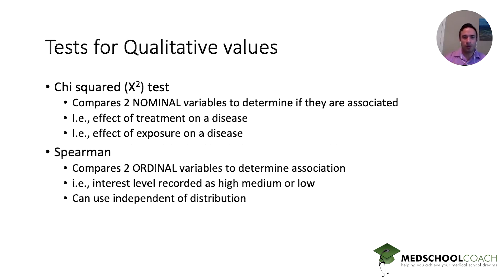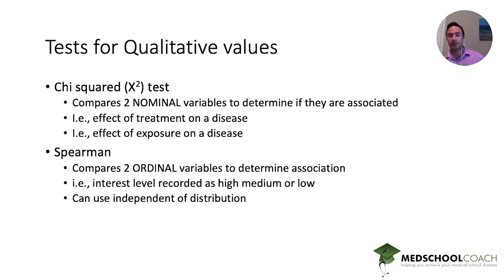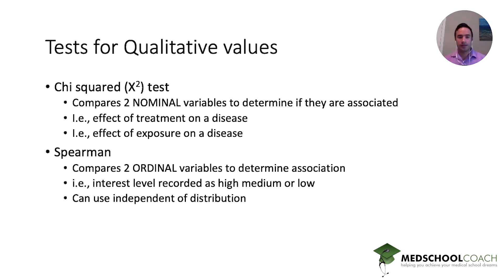For qualitative tests: nominal and ordinal values. With chi-squared tests, you're looking at nominal variables and determining if they're associated. You see this frequently for resolution rates — did it resolve? Yes or no? Two different categories. For example, was the treatment effective or not effective? Two categories. The Spearman test takes two ordinal variables to determine an association. Remember ordinal variables have some intrinsic value, such as interest level — high, medium, or low. And this can be used regardless of the distribution.